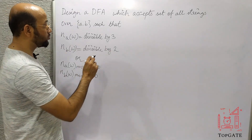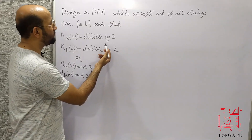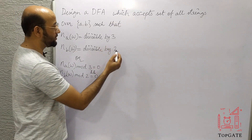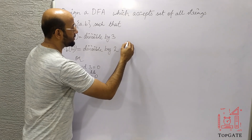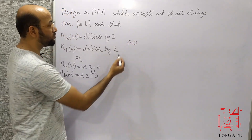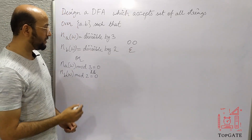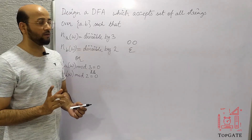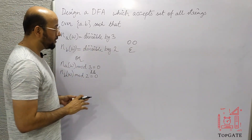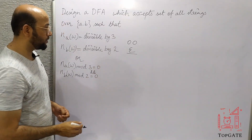So what is the shortest possible string? If the number of A's is 0 and the number of B's is 0, it should still be accepted — therefore we must accept epsilon. Since epsilon is accepted, we have to make the initial state the final state — that is a confirmed thing.